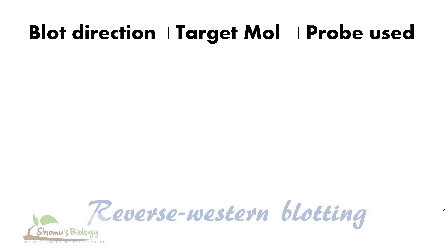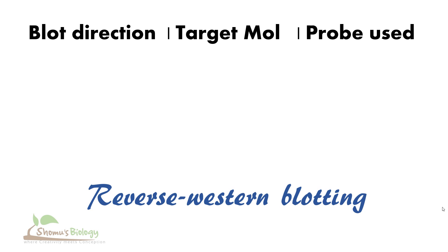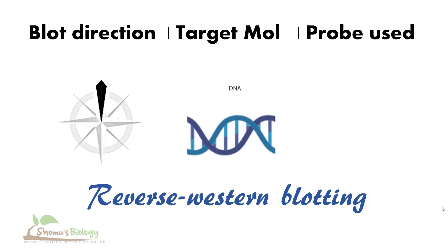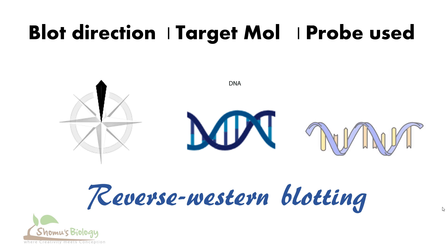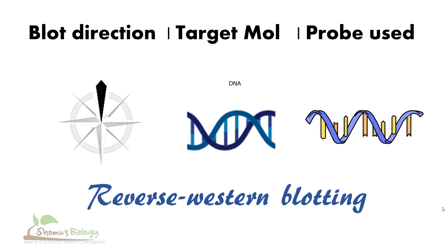The final one is reverse western blotting. You can see the arrow is reversed here. Reverse western blotting is used to detect the presence of DNA, utilizing RNA as a probe. We call it reverse western blot because we are using a reversed idea — detecting DNA with single stranded RNA — whereas usually DNA is detected with single stranded DNA in southern blotting. This is a totally different case.